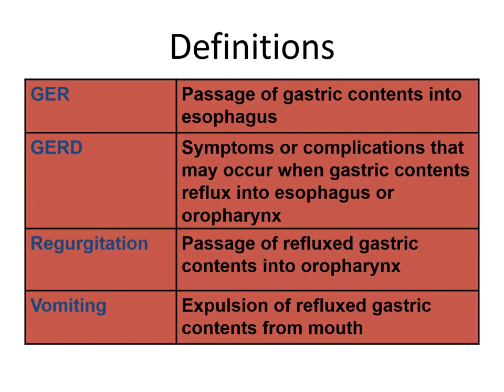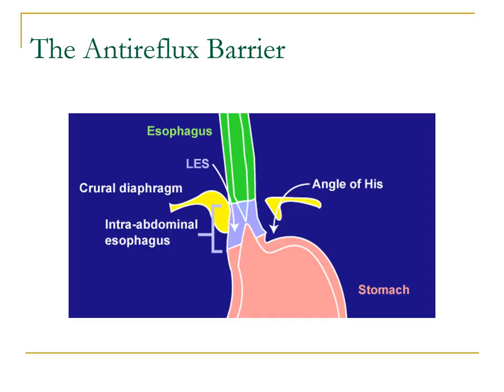Before starting, let's familiarize ourselves with a few terms. First of all, gastroesophageal reflux means passage of gastric contents into the esophagus, while gastroesophageal reflux disease is when the reflux contents cause symptoms or complications. Regurgitation means passage of reflux gastric contents into the oral pharynx, while vomiting is the expulsion of reflux contents from the mouth.